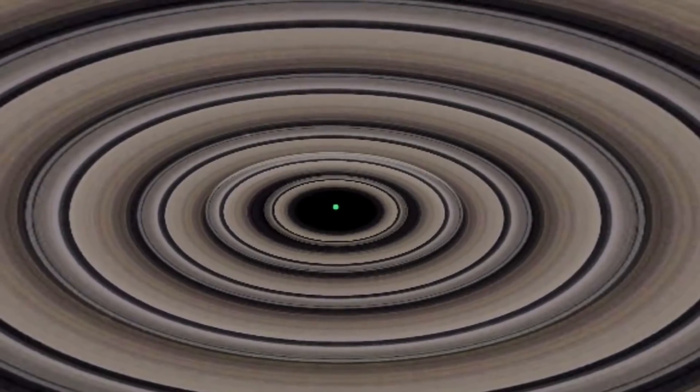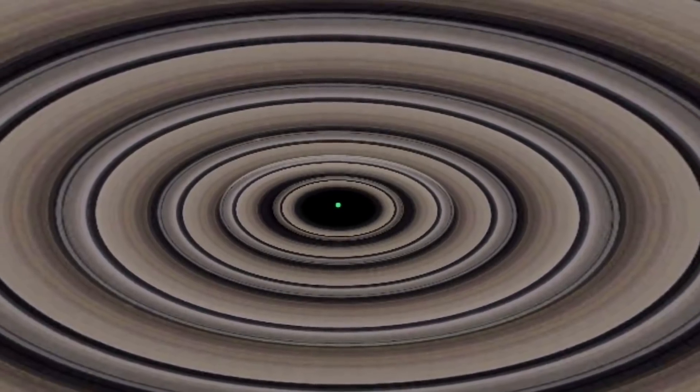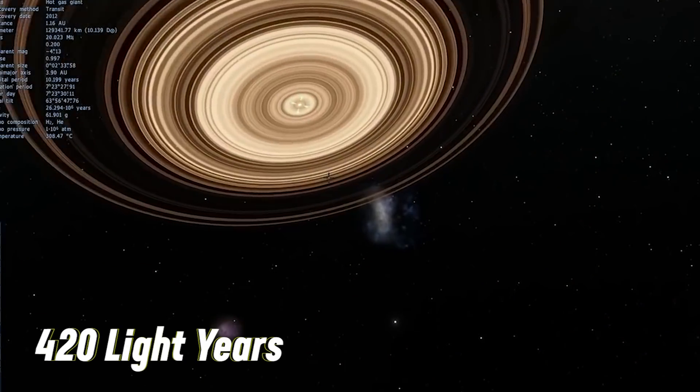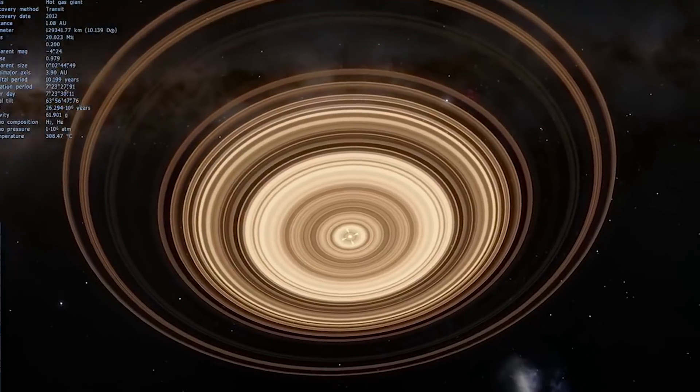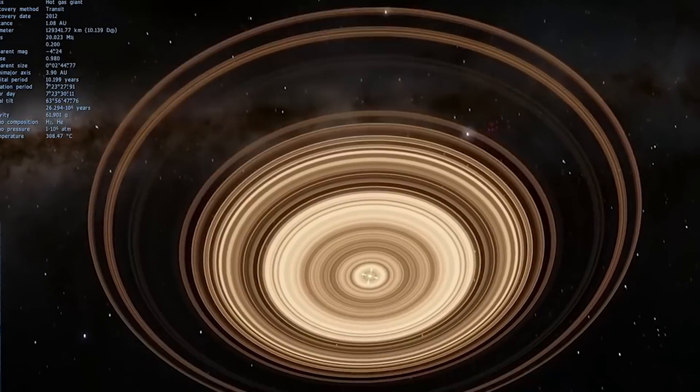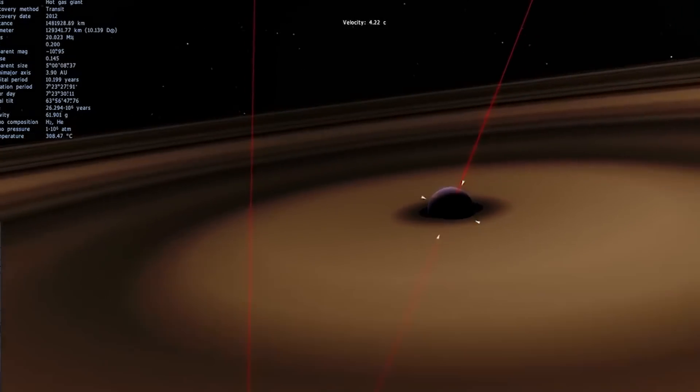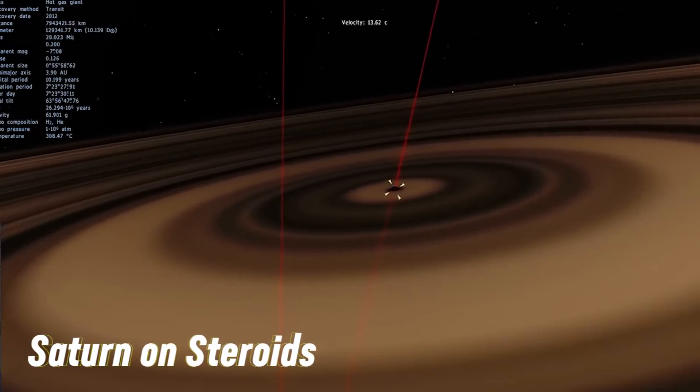J1407b is the infamous gas giant with a gigantic ring system. Located 420 light-years away from Earth, the planet possesses one of the largest known ring systems in the galaxy. This earned the planet the nickname Super Saturn, or Saturn on steroids.